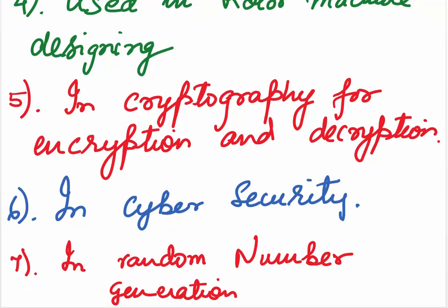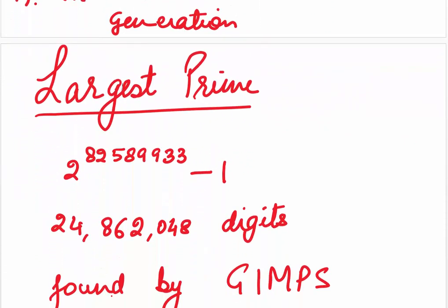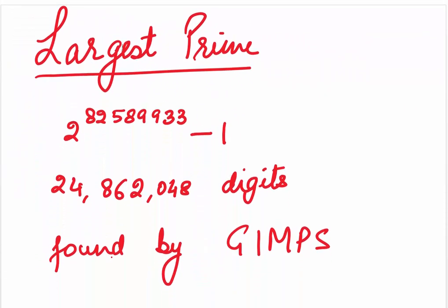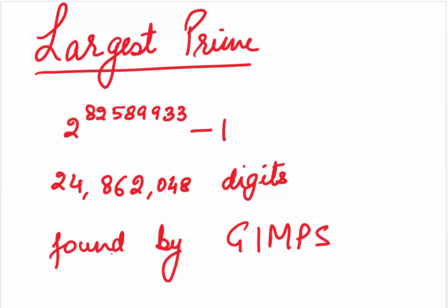Now, which is the largest prime which has been found so far? Largest prime which has been found is 2 to the power 82589933 minus 1. This is a Mersenne prime, where 82589933 is also a prime number. It has 24862048 digits. It was found by the great internet Mersenne prime search. This was found on 7th of December 2018 and so far this remains the largest.